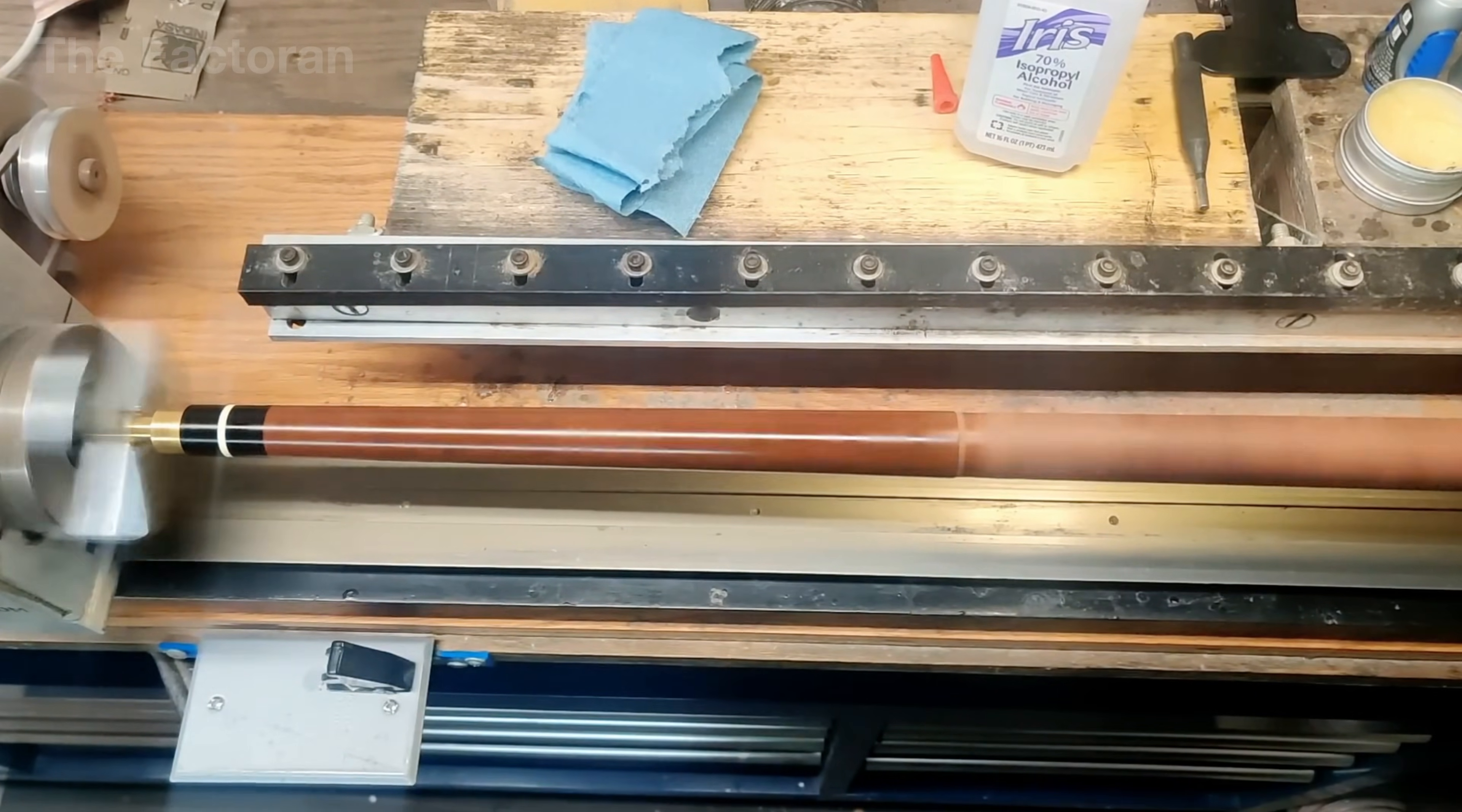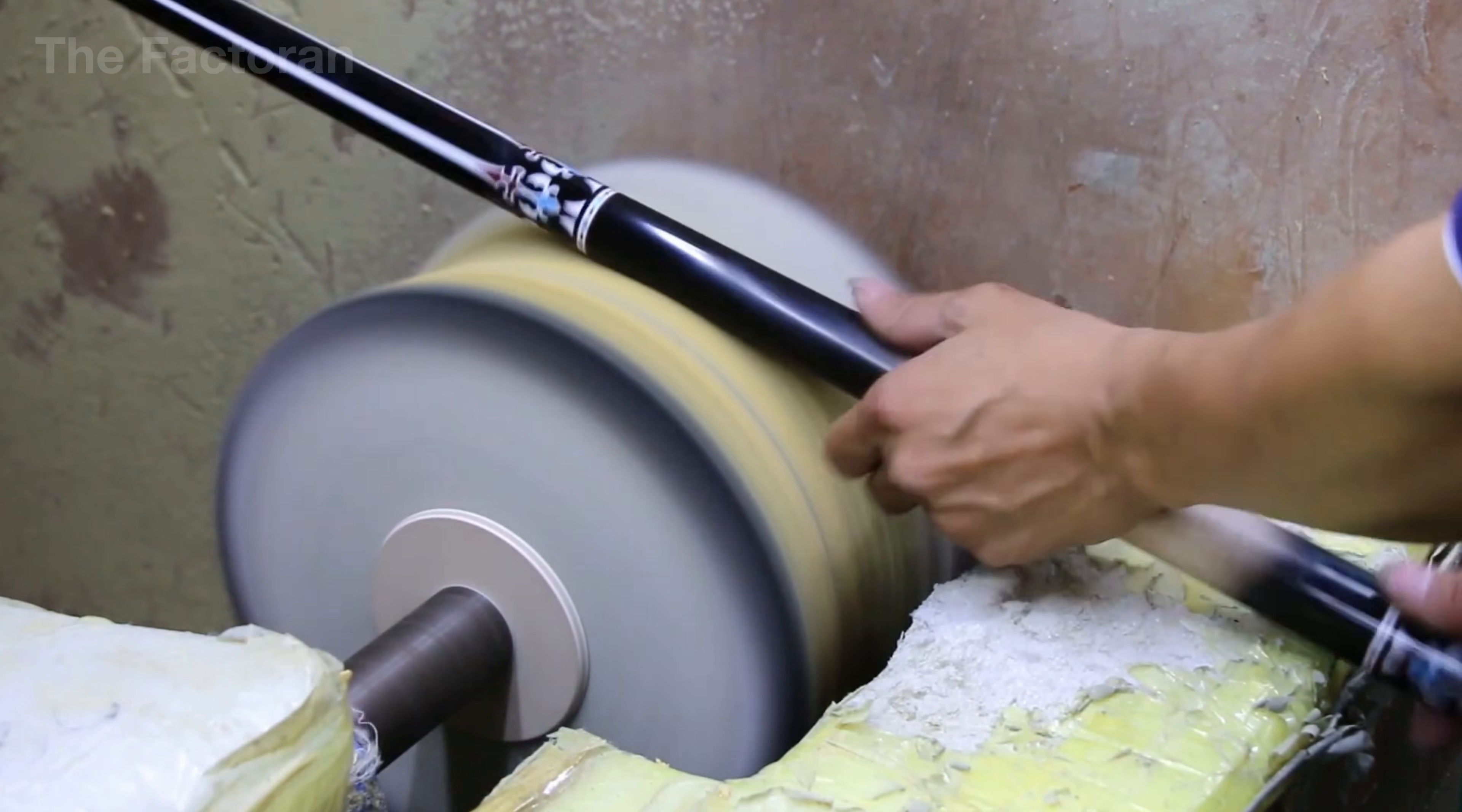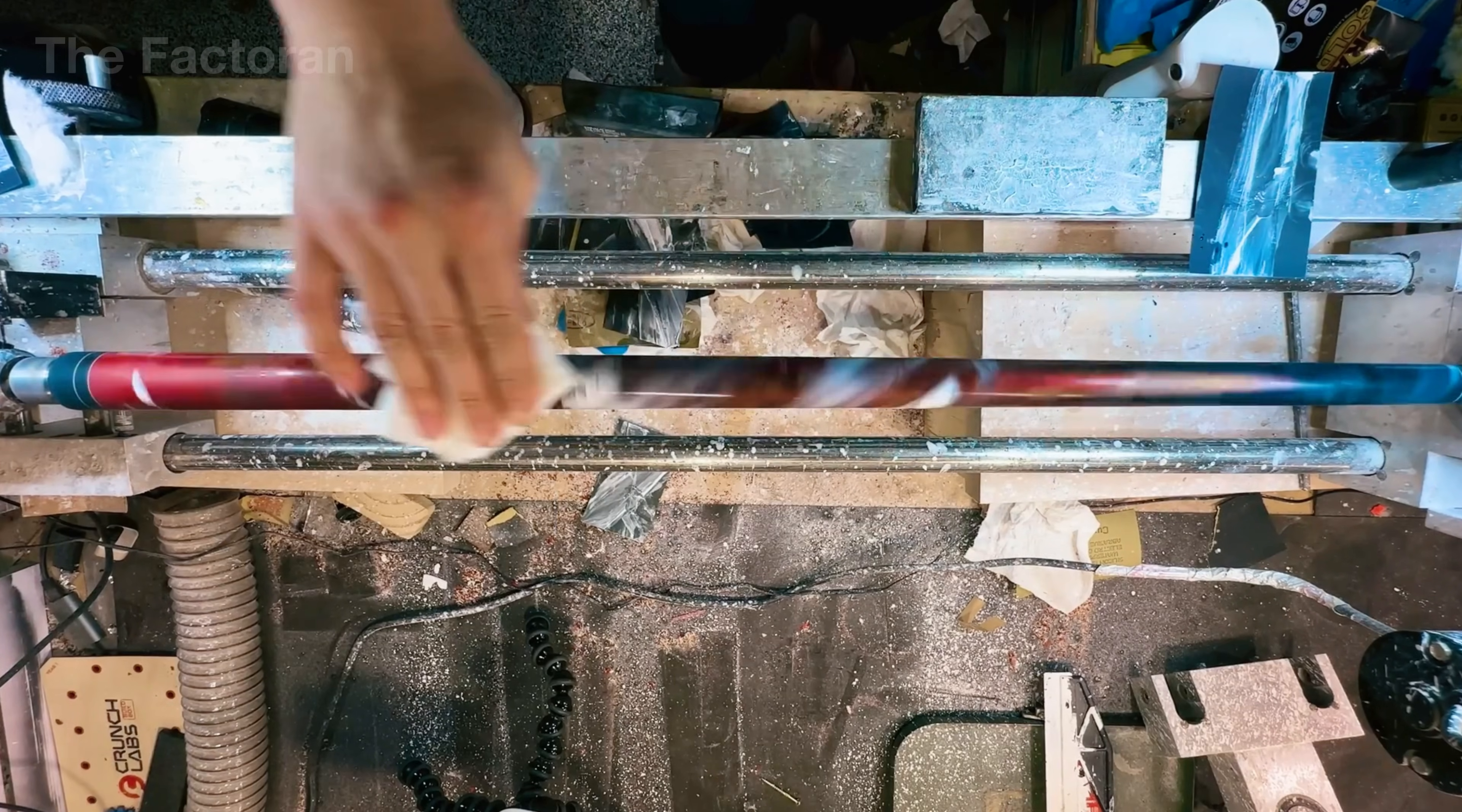Technicians ensure that both mating surfaces are perfectly flat, concentric, and free of vibration when assembled. When the shaft and butt are finally joined together, they must align with absolute accuracy, forming a seamless connection that feels like a single solid piece of wood. This flawless fit guarantees stability, consistency, and energy transfer with every shot, completing the transformation from individual parts into a cue that performs with confidence, control, and uncompromising precision.